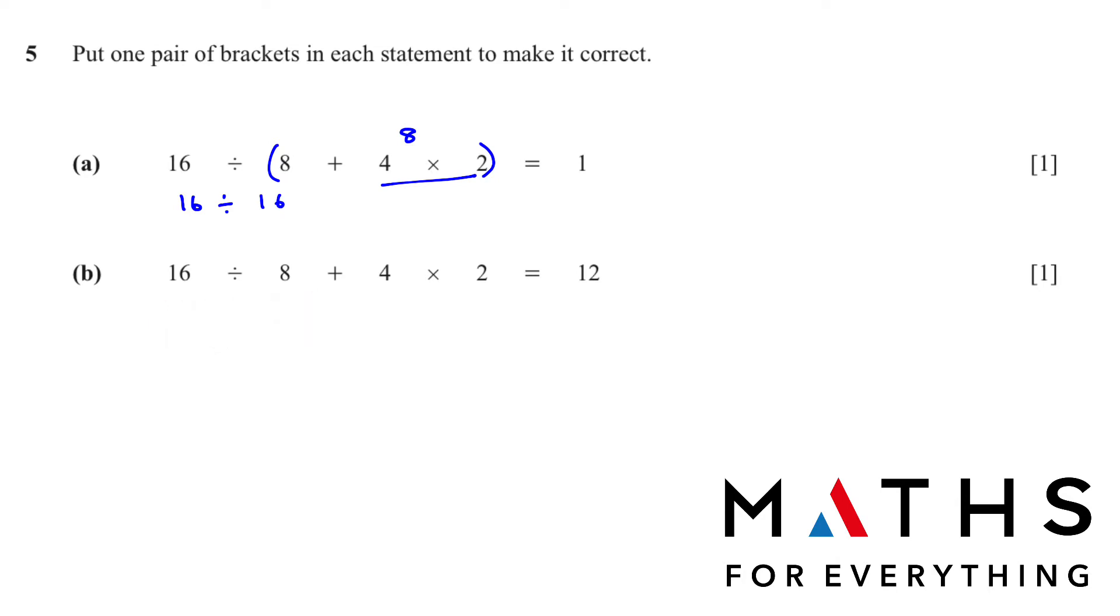Now in the second case, we have the same numbers. But it is 12. Now it's a big number. So you will have to figure out how we can get that. Whenever we put the bracket, you will have to check what works out. In this case, 16 divided by 8 will give us 2. 2 plus 4 is 6. And 6 multiplied by 2 will give us 12. So that's the answer.